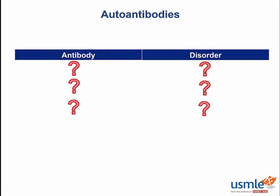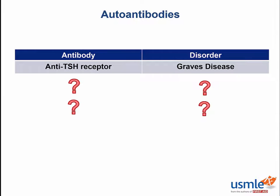We have a female patient who presents complaining of months of weight loss despite increased appetite. She claims that sometimes she can feel her heart skip a beat, complains that the office is warm, and has exophthalmos on gross examination. The diagnosis is Graves' disease. But on Step 1, just knowing the diagnosis may not be enough — they may ask what autoantibody is associated with this pathology. The answer is anti-TSH receptors. When these receptors are activated, they continuously release thyroid hormone, resulting in the clinical presentation described.